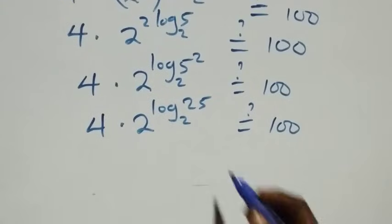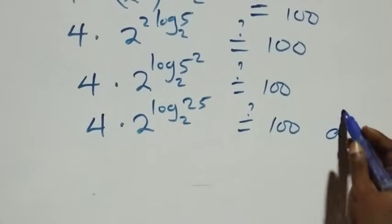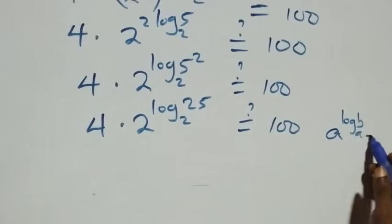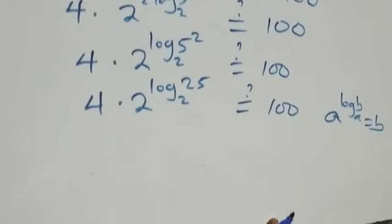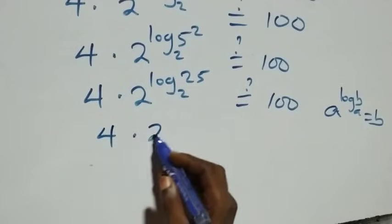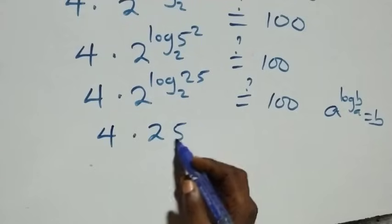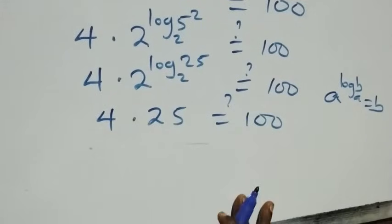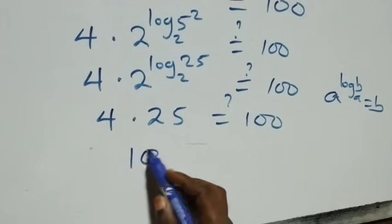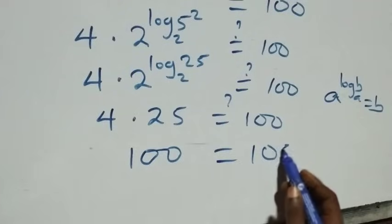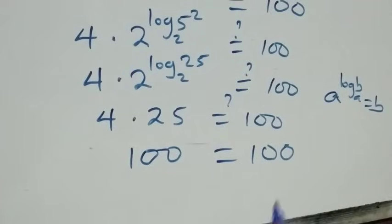This follows from the rule that a raised to power log_a(B) equals B. So 2 raised to power log₂(25) equals 25. What we have is 4 times 25, which equals 100. Of course, 4 times 25 gives us 100, which equals 100. Left answer equals right answer.